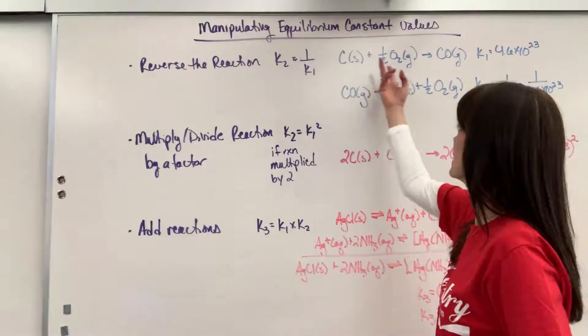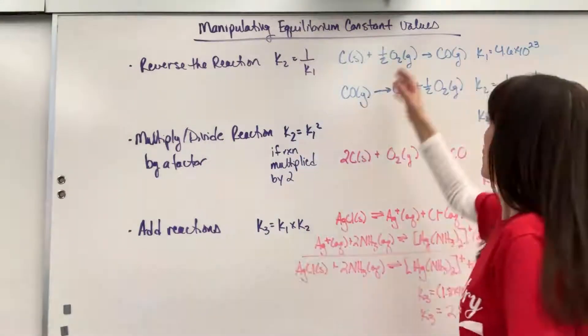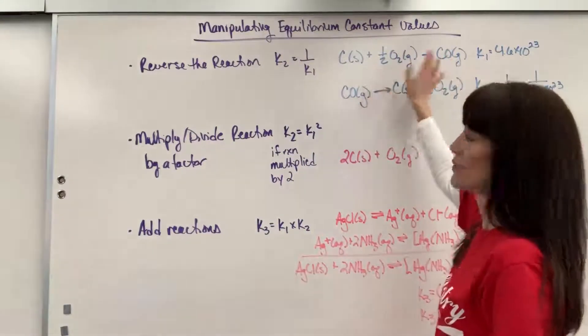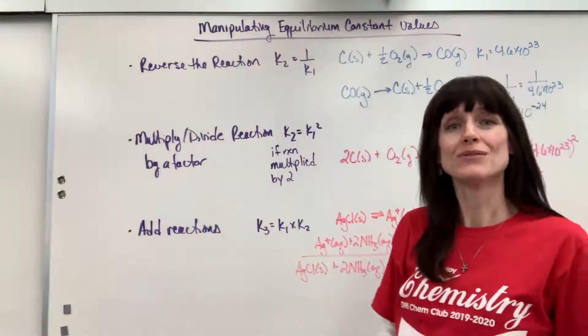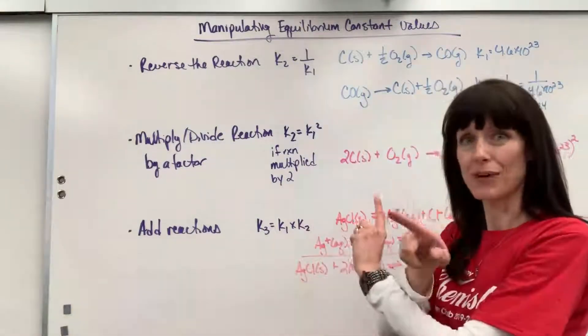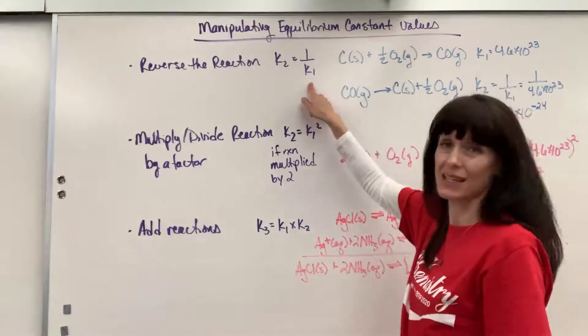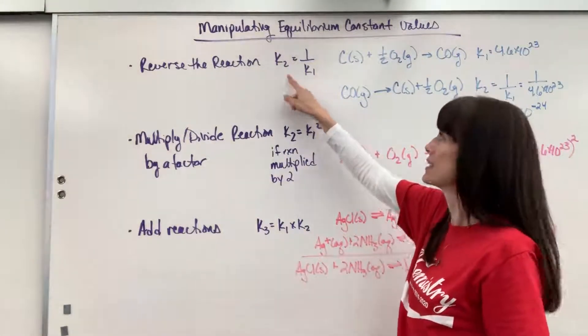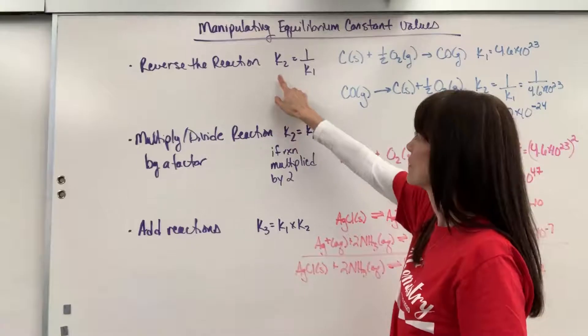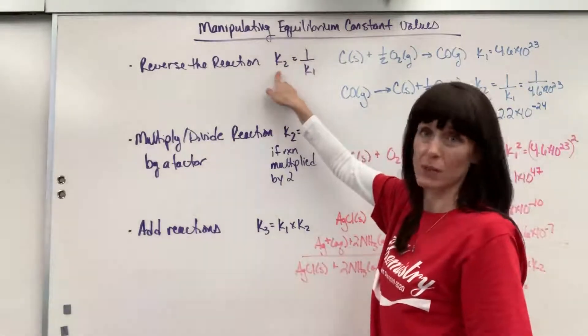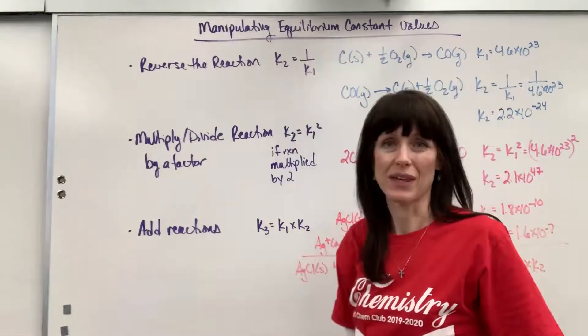The first one is if we flip the reaction, and when I say flip we write the products as reactants and the reactants as products. When you do that, so we flip products and reactants, really what we did is we reciprocated the equilibrium expression. So I have this written here that the new equilibrium expression is just the reciprocal of K1.